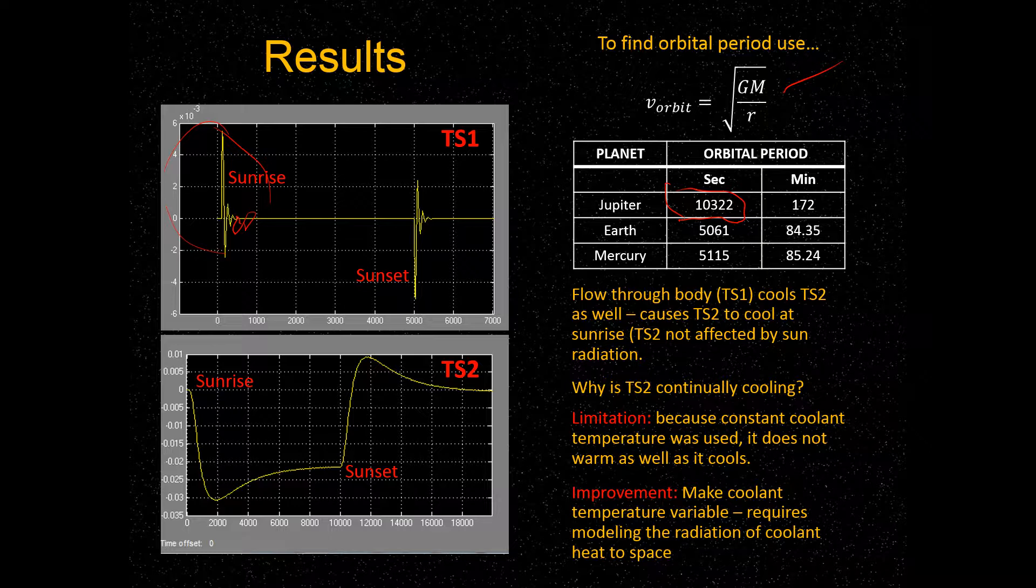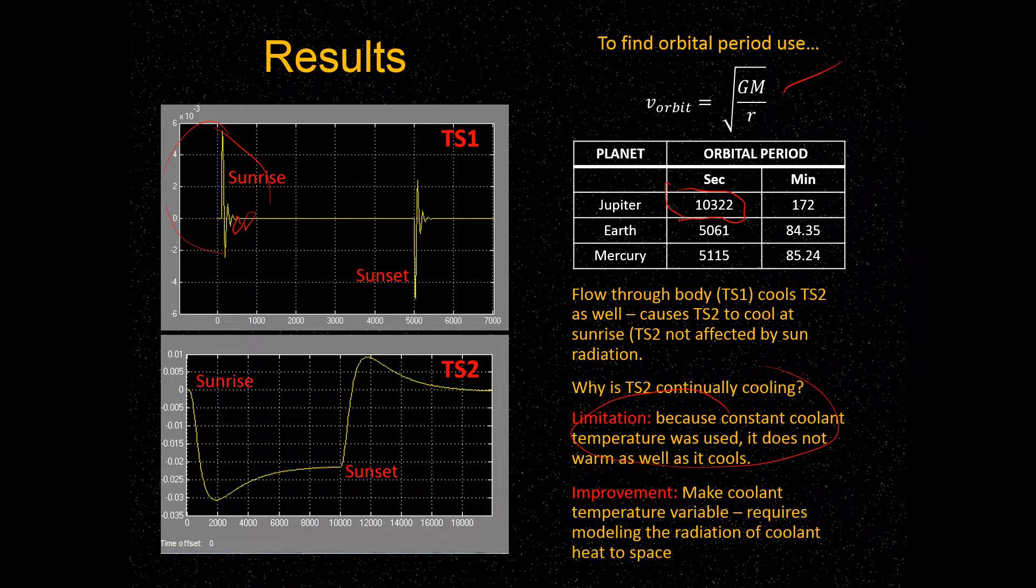Now, we wondered why that was. Why would it keep cooling? And what we thought is that one of the assumptions we made in our model was that the coolant was going to be a constant temperature. And so that coolant would actually do much better, because we designed it to cool surfaces than it would to warm them back up. So one of our limitations here that we noted is that the coolant temperature, because it was constant, doesn't warm as well as it cools.